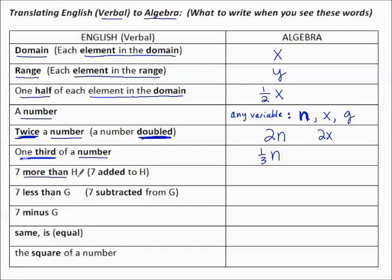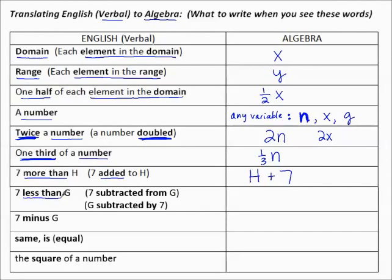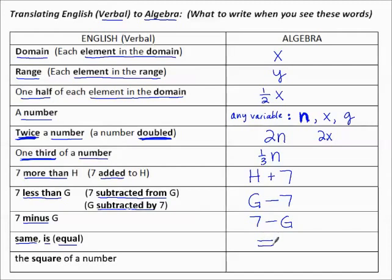Seven more than H, or seven added to H — we start with what's getting added to, the H, and then 'added' or 'more than' is the plus, and then seven. Seven less than G, or seven subtracted from G, or G subtracted by seven — I'm starting with G, so G minus 7. Seven minus G is telling you exactly what to write: seven minus G. 'Same' means equal — we put the equal symbol. The square of a number N is N squared.